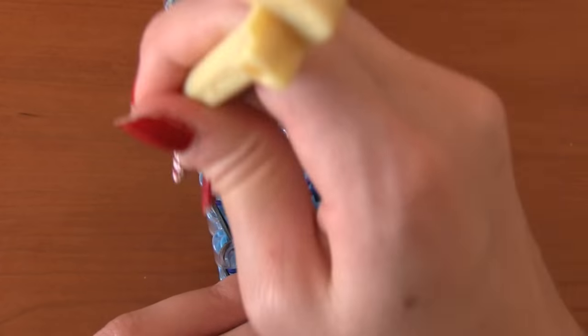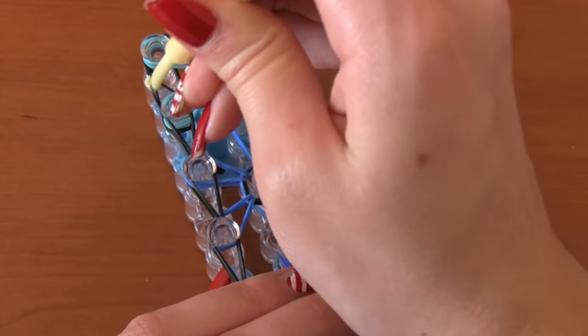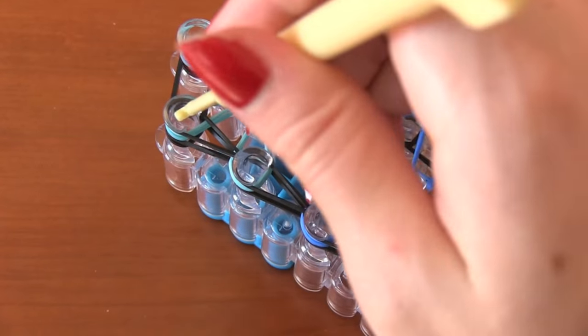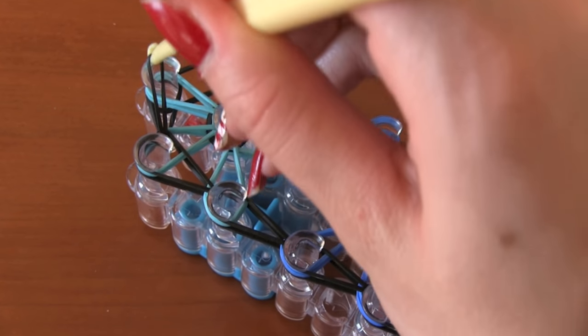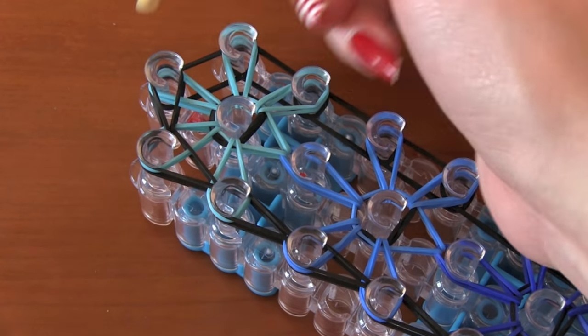Very easy. And you're going to pull that last black band over to the top middle peg. And then we're going to do this all over again for the right side.